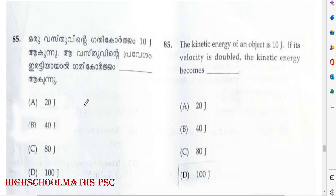Question: The kinetic energy of an object is 10 Joules. If its velocity is doubled, the kinetic energy becomes? Answer: Option B — 40 Joules.